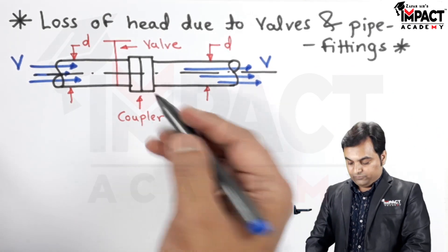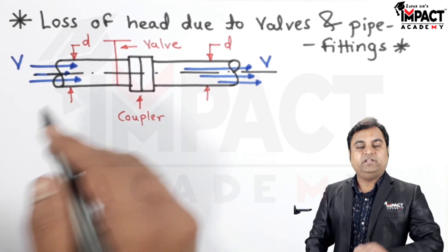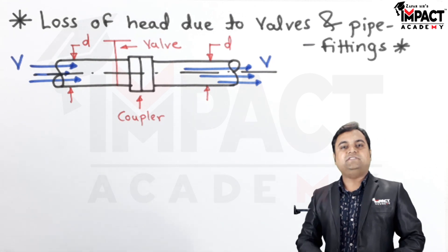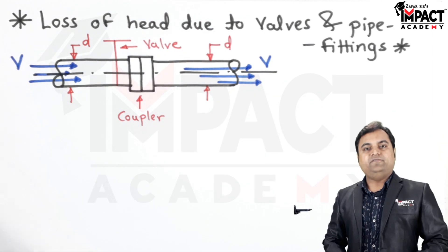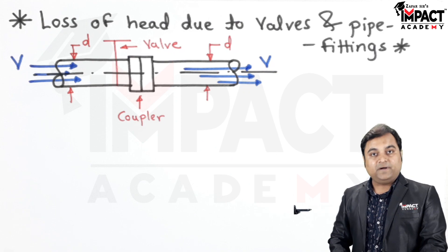So due to the presence of this coupler and valve, there will be some loss, also called as a minor loss due to valve and other fittings, and the formula is given by...